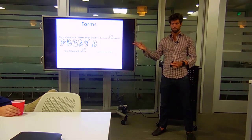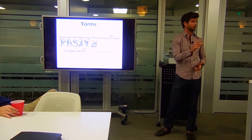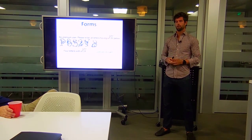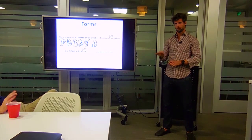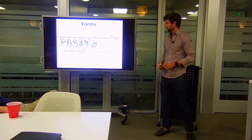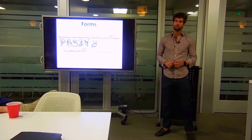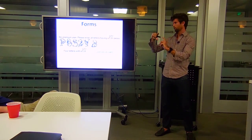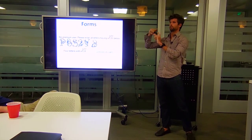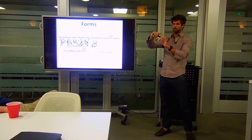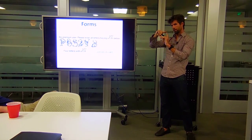There are two methods to fight spam without CAPTCHAs. One is called double opt-in, where you send them an email and they respond confirming their address — that works pretty well. The second method is called the honeypot method, where you hide a field in the form that only a bot is going to fill out. For instance, on a contact form you might put a 'state' field that's hidden. If anyone fills it out, you know the submission is invalid.